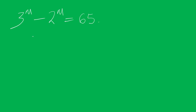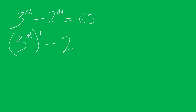For us to solve this, we need to make this a square. So for us to do that, you know you have 3 to the power of m, times 1 minus 2 to the power of m, times 1, raised to the power of 1, equal to 65.